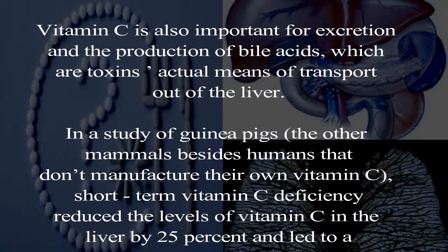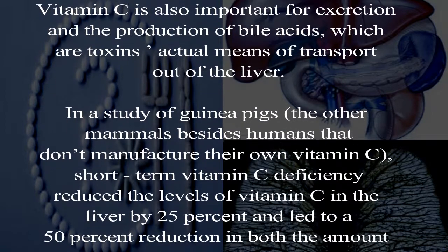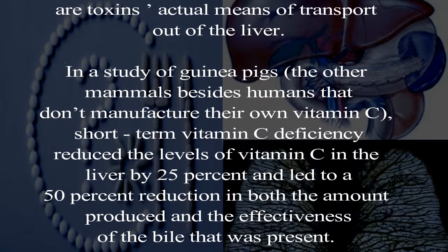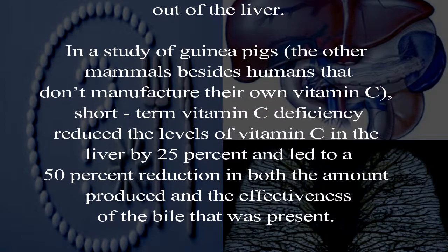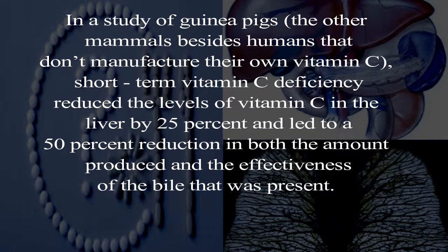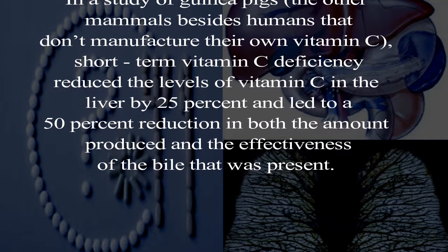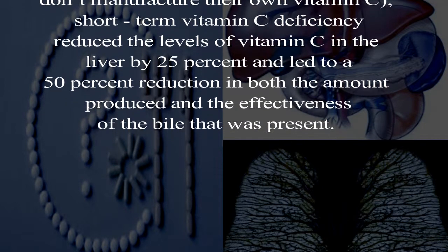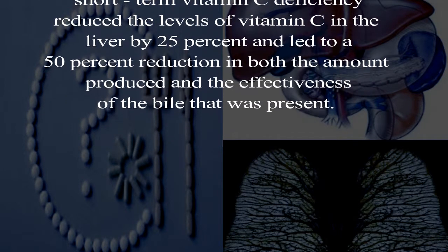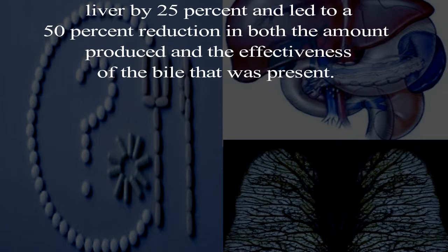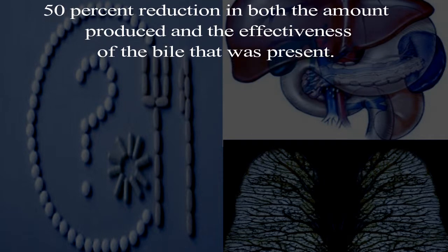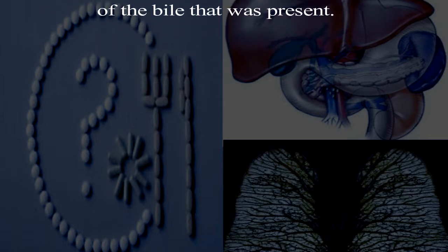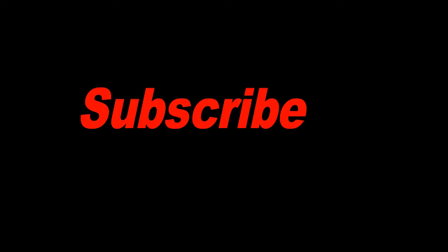Vitamin C is also important for excretion and the production of bile acids, which are toxins' actual means of transport out of the liver. In a study of guinea pigs, the other mammals besides humans that don't manufacture their own vitamin C, short-term vitamin C deficiency reduced the levels of vitamin C in the liver by 25 percent and led to a 50 percent reduction in both the amount produced and the effectiveness of the bile that was present.